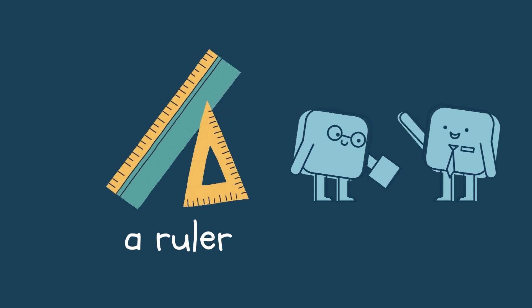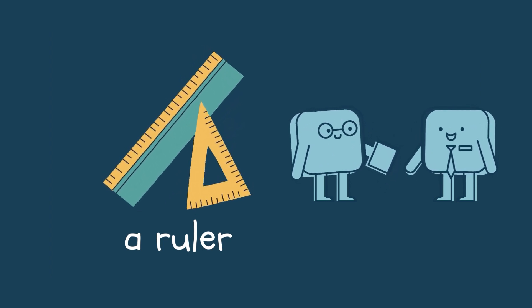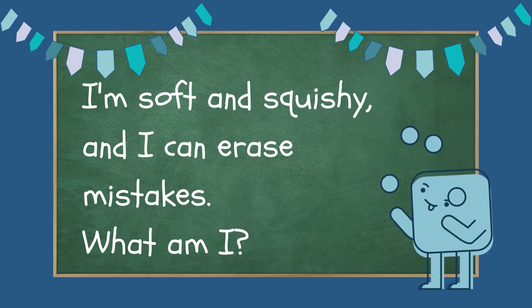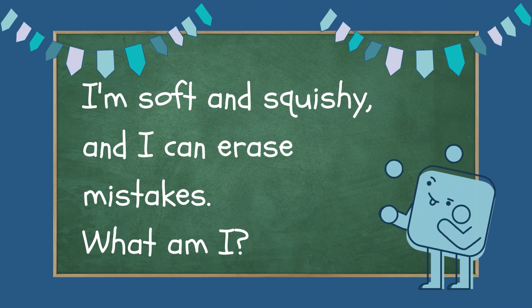A ruler, also called a scale in some countries. Well done everybody. I am soft and squishy and I can erase mistakes. What am I? The answer is hidden in the riddle itself.